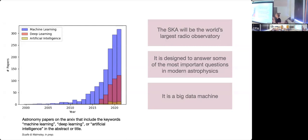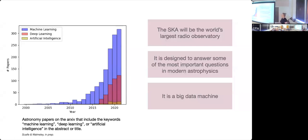These days if you want to automate things, especially to mimic something humans are doing, you design an artificial intelligence system to replicate that process. Within astronomy, the growth of artificial intelligence — not just in radio astronomy but in other branches of astronomy — has accelerated massively over the last decade. This is a plot of papers on the archive with keywords machine learning, deep learning, or artificial intelligence, and you can see it's just shooting up.